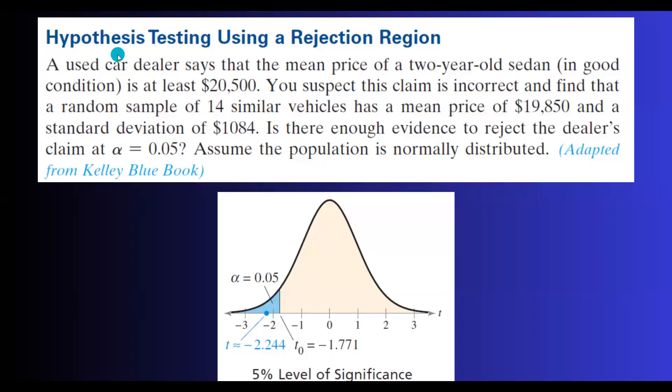In this question, we're using hypothesis testing using a rejection region to analyze this specific case. A used car dealer says that the mean price of a two-year-old sedan in good condition is at least $20,500.